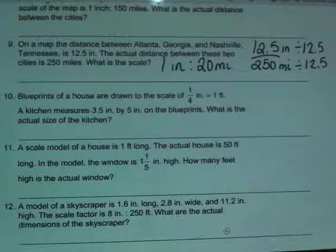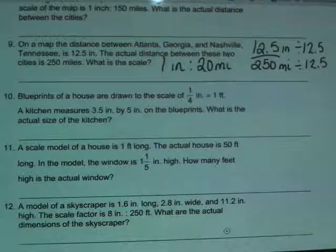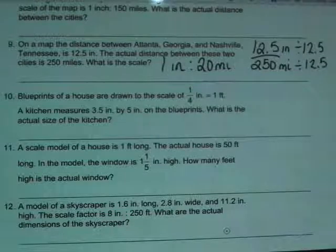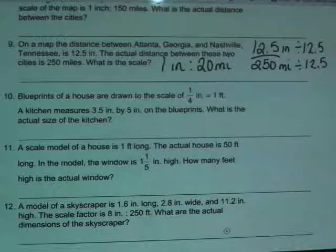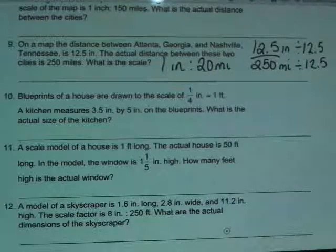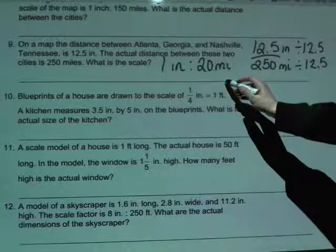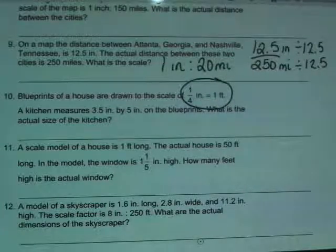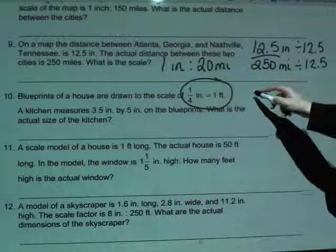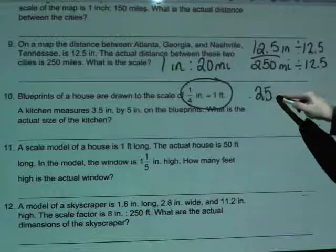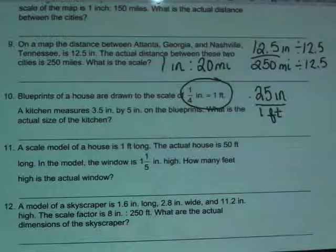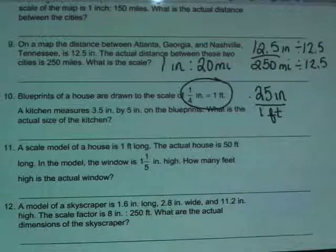Now we'll take a look at number 10. It says, blueprints of a house are drawn to the scale of 1 quarter inch equals 1 foot. A kitchen measures 3 and a half by 5 inches on the blueprint. What is the actual size of the kitchen? So, really this is two questions embedded in one. Because, we have to find the length and the width of the actual kitchen. So, here we start off with the scale that a quarter inch on the blueprint represents 1 foot of actual distance. So, again, I'm going to write that as a decimal like I did earlier. So, I'm going to write 0.25 inches is equivalent to 1 foot. Which is, again, simply exactly what they just told me I'm writing that down.